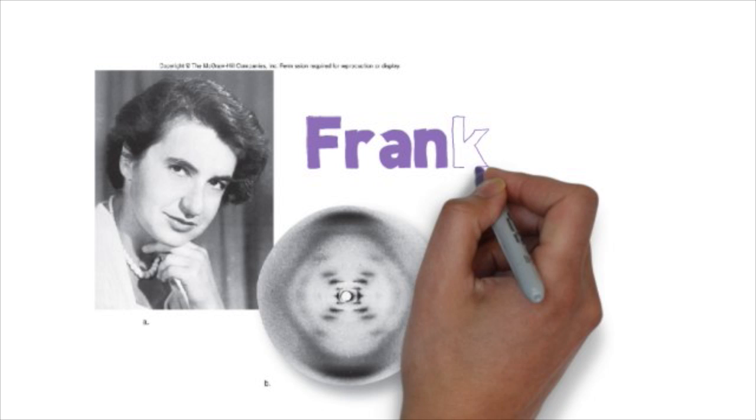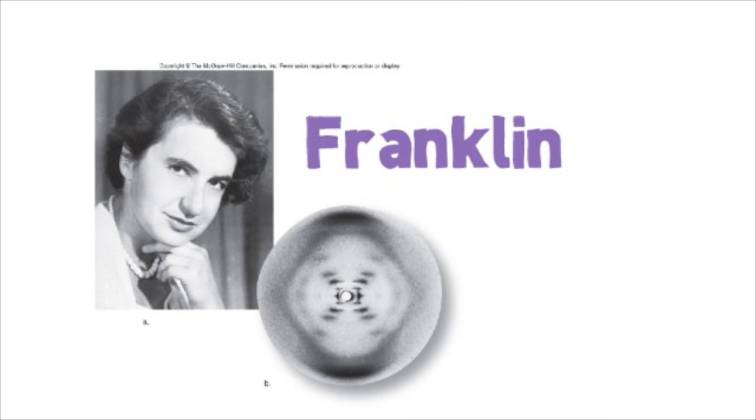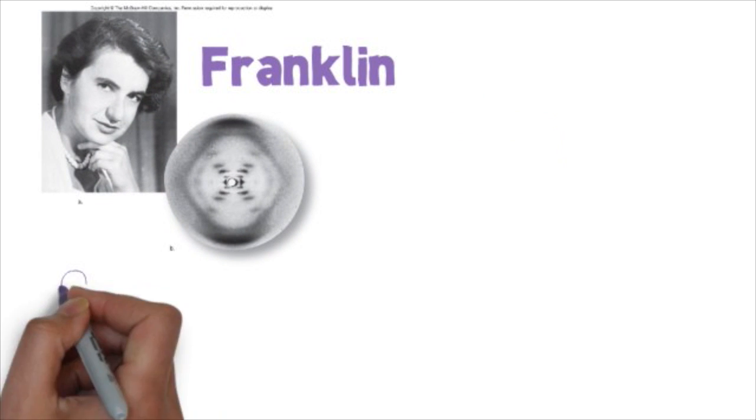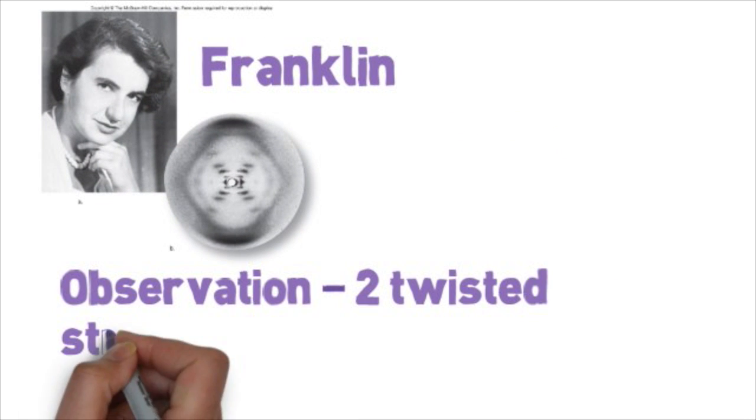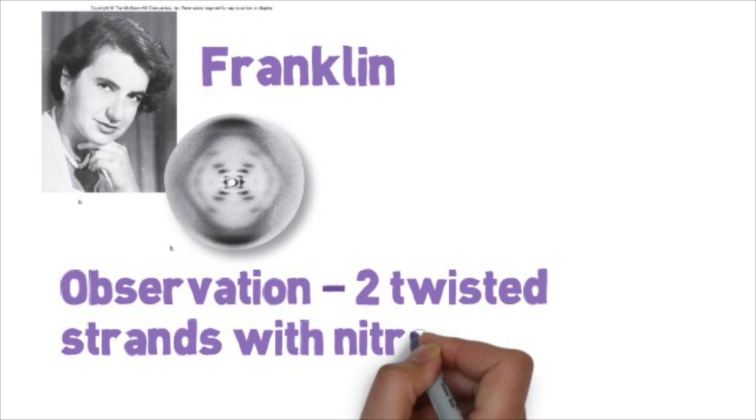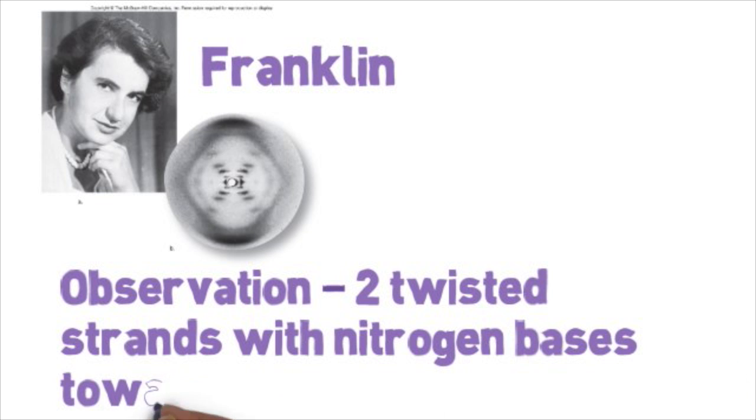Another important person that helped in the discovery of the DNA structure was a scientist named Rosalind Franklin. She took an x-ray picture of the DNA structure. From this picture, she observed that the DNA had an x-shaped pattern, meaning it had two strands that were twisted. She also observed that the nitrogen bases were towards the center of the DNA.